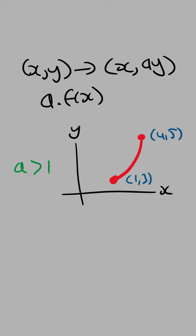So for this graph, if we have the points (1, 3) and (4, 5), after a dilation by a factor of a from the x-axis, where a is larger than 1, the new points are then going to become (1, 3a) and (4, 5a).